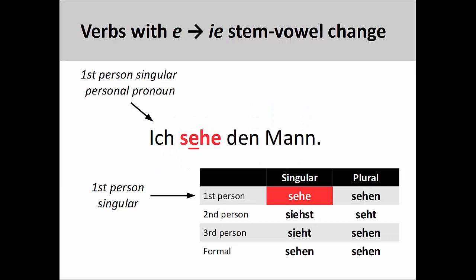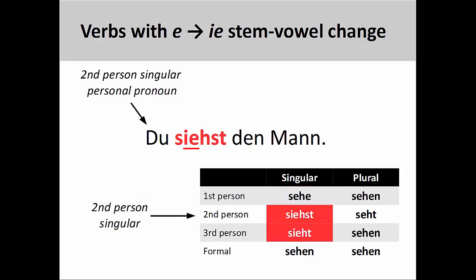The first group has a stem-vowel that changes from e to ie. So although the first-person singular form of sehen would be sehe, as in ich sehe den Mann — I see the man — the second-person singular form would be siehst, as in du siehst den Mann, you see the man. The third-person singular form would be sieht.